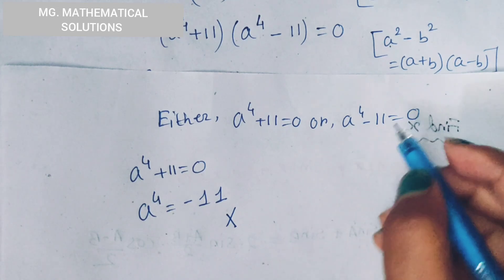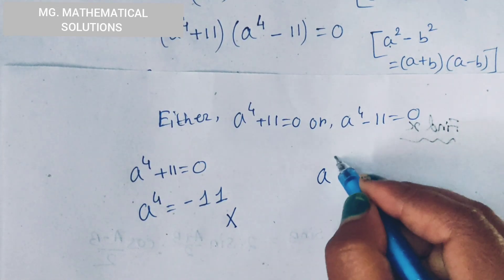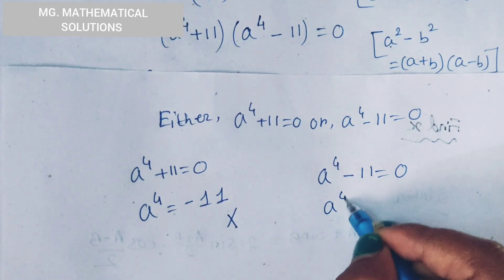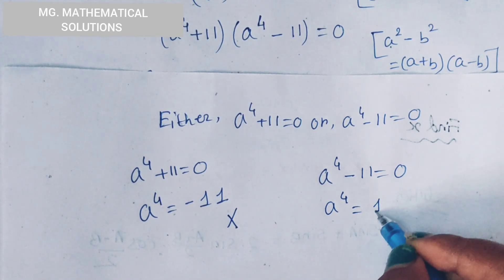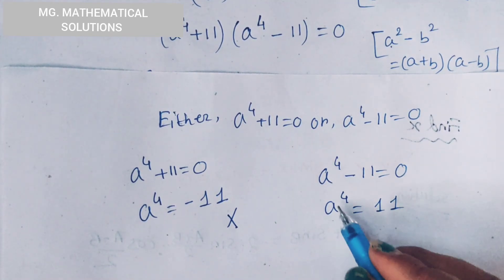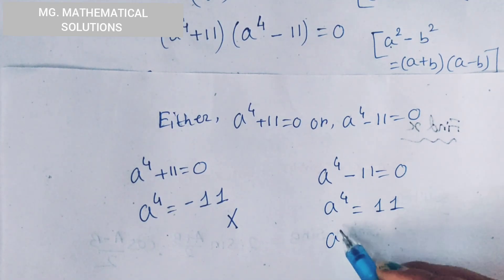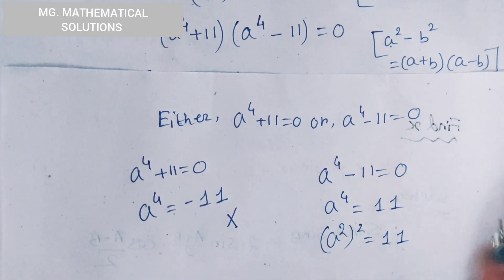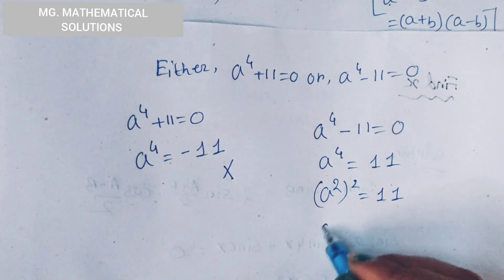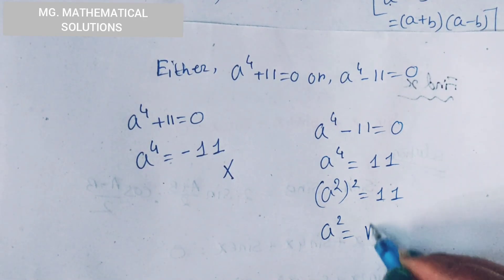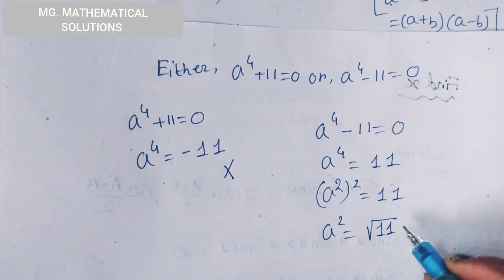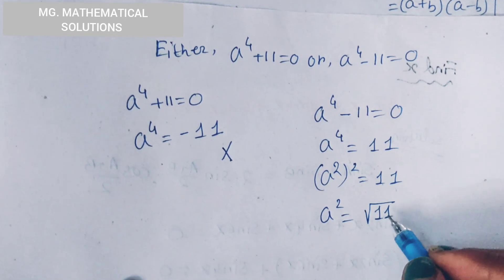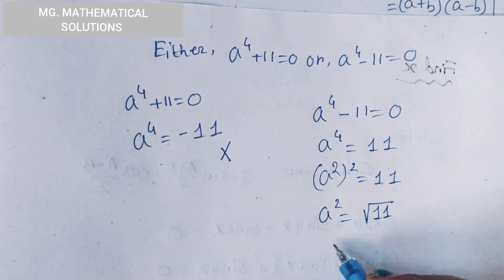Now we solve the equation a to the power 4 minus 11 equal to 0. So a to the power 4 equal to 11. A to the power 4 we can write as a to the power 2, whole to the power 2, equal to 11. So a to the power 2 equal to root over 11. We take the positive value here.